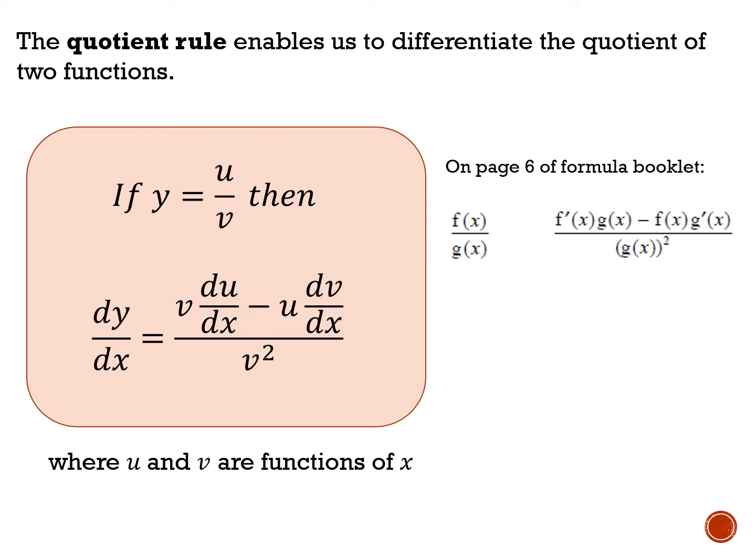In the formula book, the table shows the function and its derivative. It uses f and g instead of u and v, so f over g, but it's the same rule. I'll use u and v in my working — you can use f and g if you prefer. Like the product rule, I'll state what u and v equal, differentiate both, state the formula, then substitute in. Showing your working helps avoid mistakes and maximises marks.